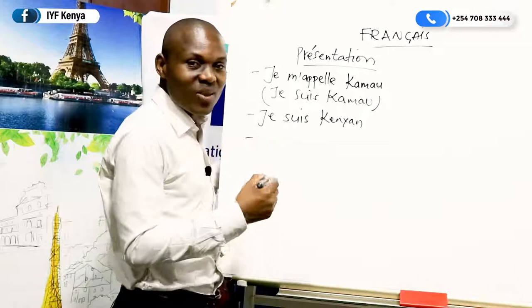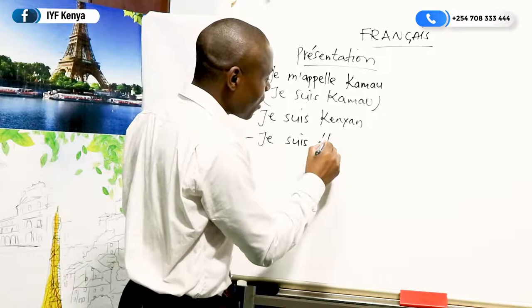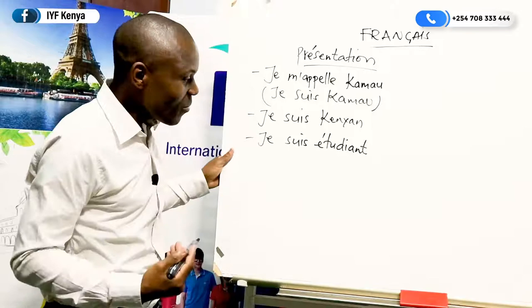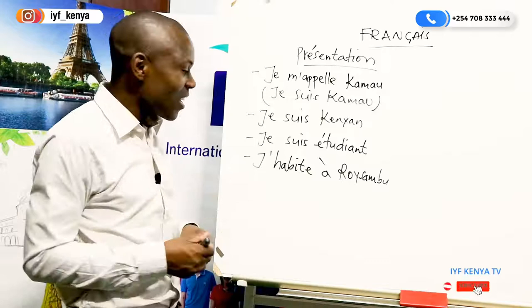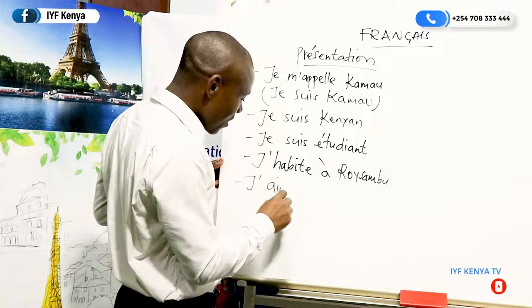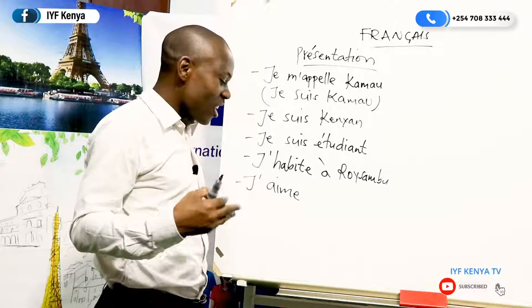I am a student — je suis étudiant. I said I will bring some new vocabularies. Je suis étudiant. The word étudiant means student. If you live in Kasarani: j'habite à Kasarani. If it's in Mwiki: j'habite à Mwiki. If it's in Langata: j'habite à Langata. If it's in Karen: j'habite à Karen, something like that. We also have this very important word: j'aime, which means I like or I love.